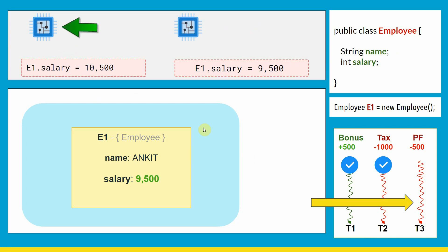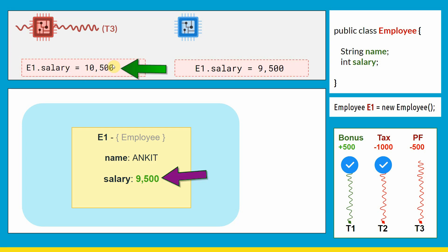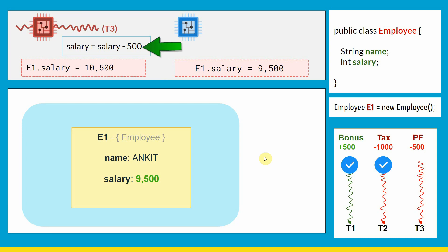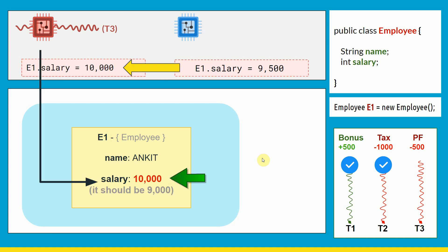Now our third thread T3 arrives and is picked up by the first core. If you see here, core one's cache is stale — it's invalid because it is not aware of the changes that have been written to RAM. So core one will just get the value from its cache without knowing whether the RAM value has changed. It will use that stale value, perform the operation, update the cache, and try to write the value to RAM. That's an issue — the core has performed an operation on stale data.